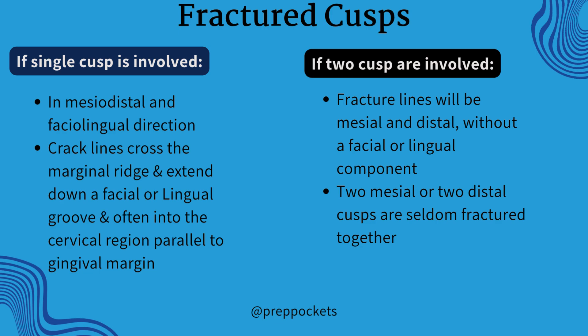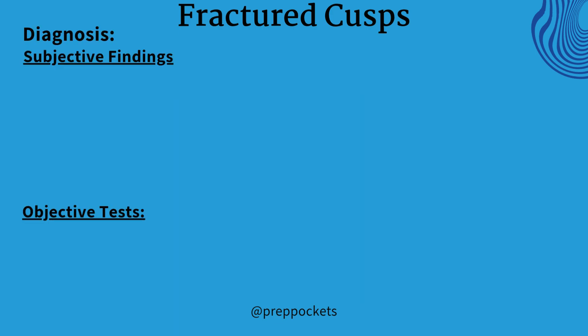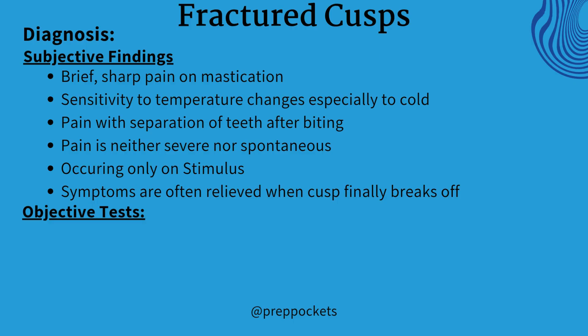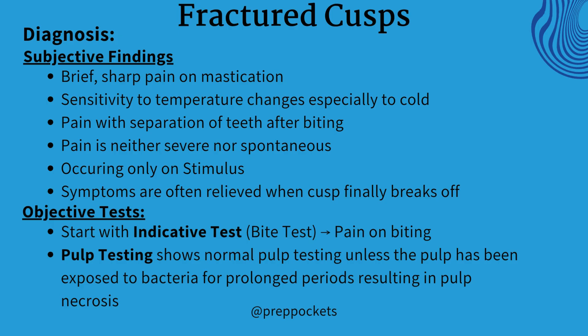If two or more cusps are involved, it will be only in the mesiodistal direction; two mesial or two distal cusps are seldom fractured together. The patient will come with a complaint of sharp and brief pain on mastication, sensitivity to cold, and pain when teeth separate after biting — neither severe nor continuous. Try doing an indicative test first, like a bite test, which will show positive results. The next step is pulp testing to see the involvement of pulp.